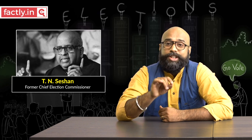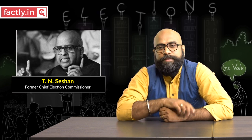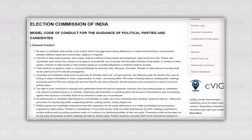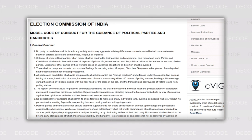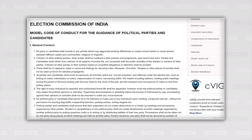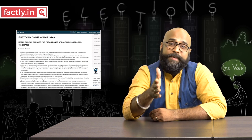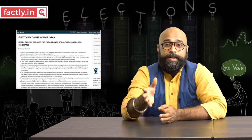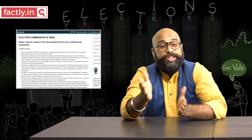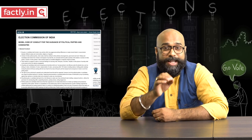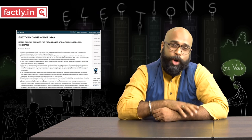The 1991 elections were a huge turning point for the implementation of the MCC, where the ECI took proactive steps to ensure it was observed. From then on, it has become an essential part of the election process. The MCC comes into effect as soon as election dates are declared by the ECI and remains in place until election results are declared. The MCC guidelines can be categorized into four broad groups: general conduct, meetings and processions, polling day and polling booths, and guidelines for parties in power.